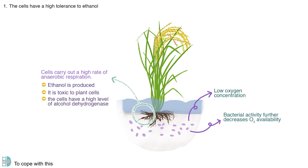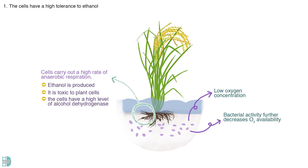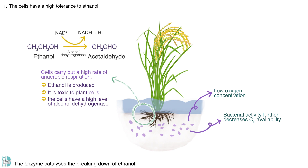To cope with this, the cells have a high level of an enzyme called alcohol dehydrogenase. The enzyme catalyses the breaking down of ethanol, reducing its harmful effects on the cells.